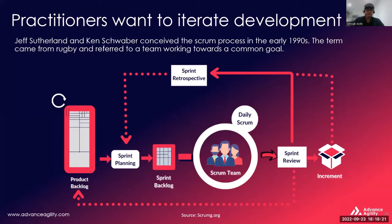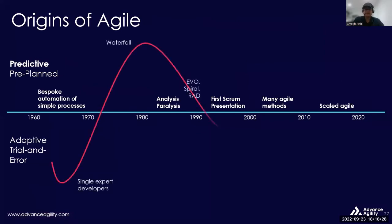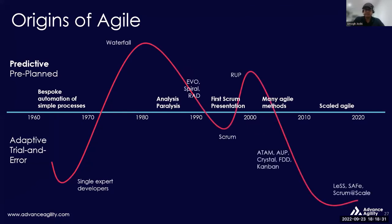So looking at the origin of agile — a bit of history — it started somewhere in the 1980s, and in 2001 it became very popular when the Agile Manifesto came out. Since then we have been working in agile ways of working, which is something adaptive, trial and error, especially for complex products and solutions.